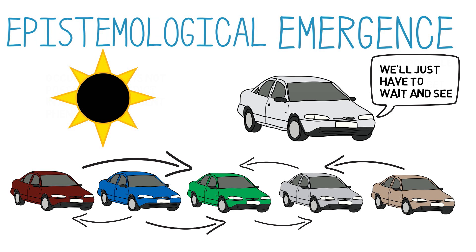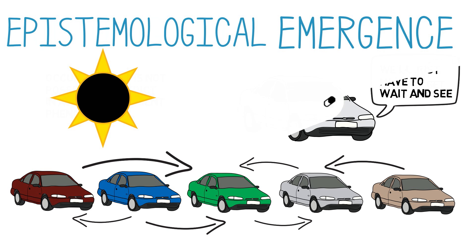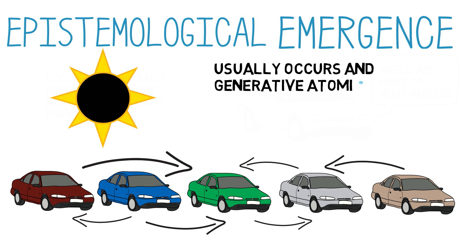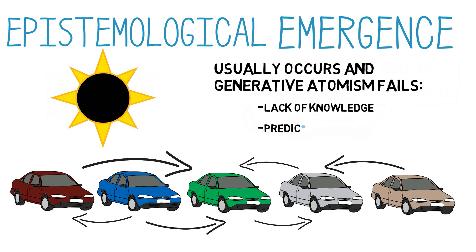But ontologically, the system is still nothing but a collection of cars and their interactions. Epistemological emergence usually occurs and generative atomism fails either because of our lack of knowledge of the processes involved, or because the prediction is far too complicated to carry out.